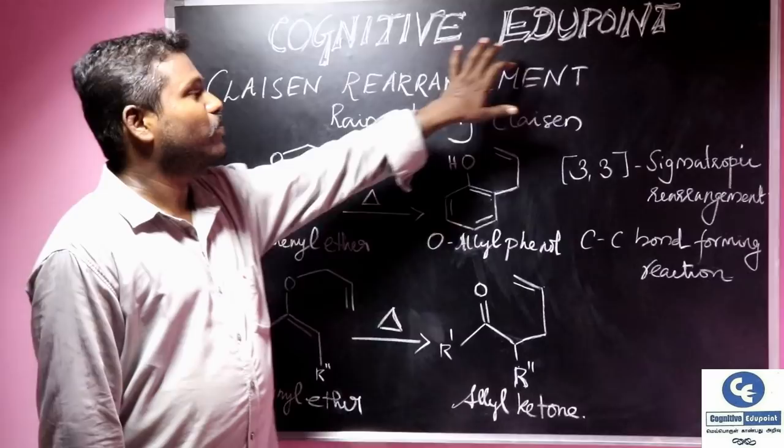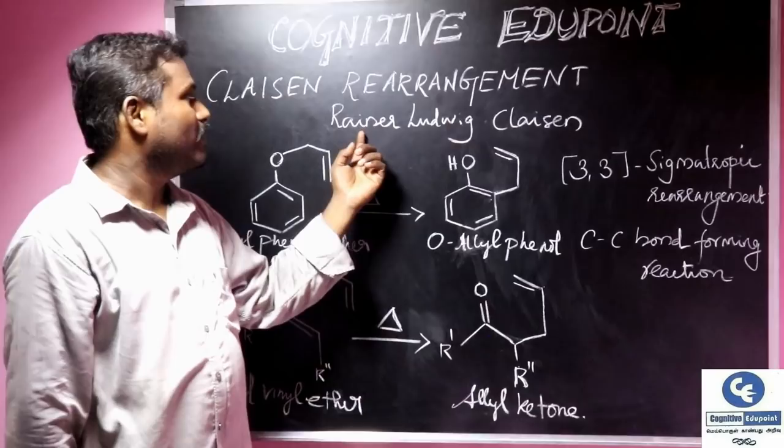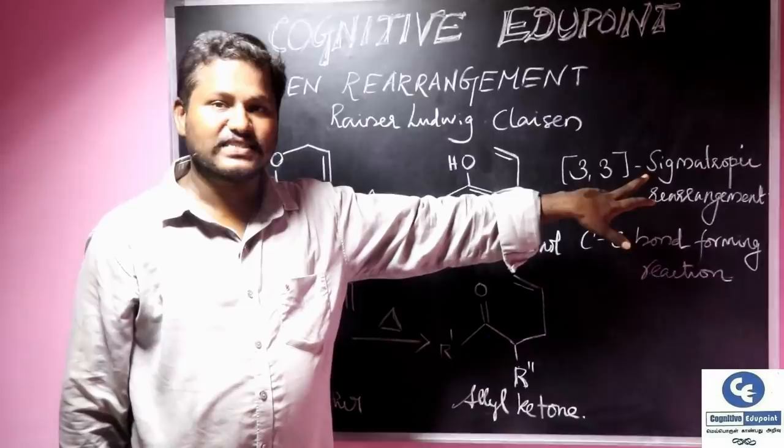Hello friends, as part of Cognitive Edupoint's online learning program, today we are going to discuss Claisen's rearrangement, which was discovered by Rainer Ludwig Claisen in 1912, which is a classic example for [3,3] sigmatropic rearrangement.